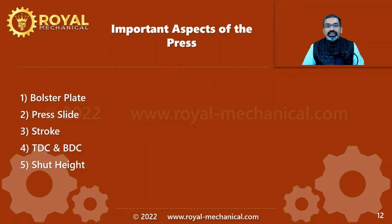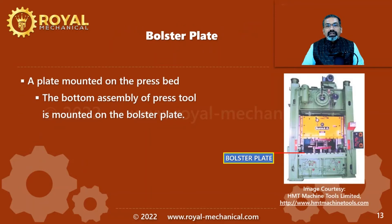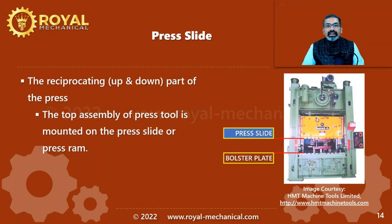Now let me explain a few important aspects of the press machine: the bolster plate, the press slide, the stroke, the TDC, the BDC, and the shut height. A bolster plate is a plate mounted on the press bed; it has provisions like T-slots to mount the press tool. The bottom assembly of the press tool is mounted on the bolster plate. The reciprocating part — the part which moves up and down — is called the press ram or press slide. The top assembly of the press tool is mounted on the press slide.